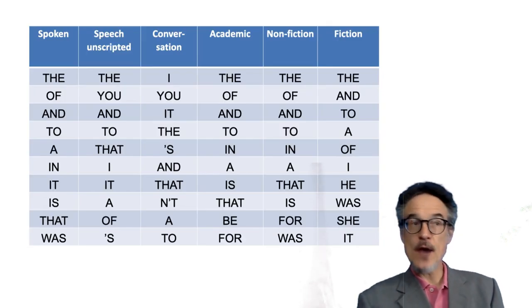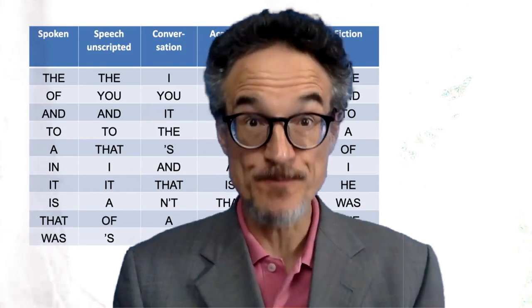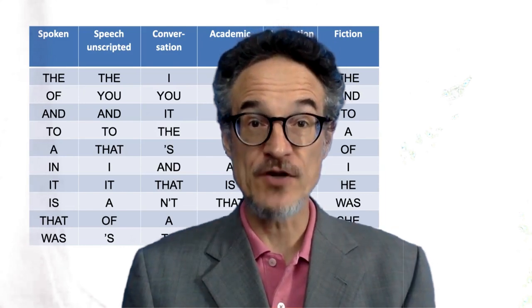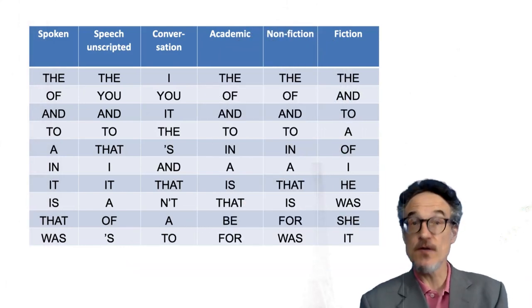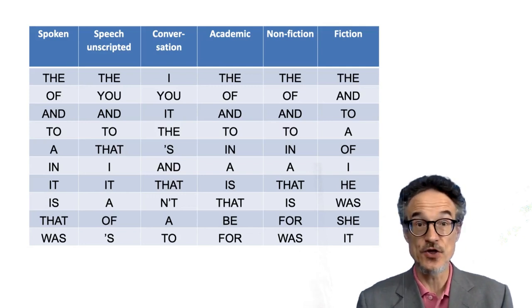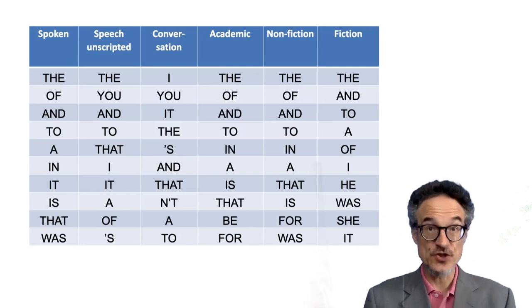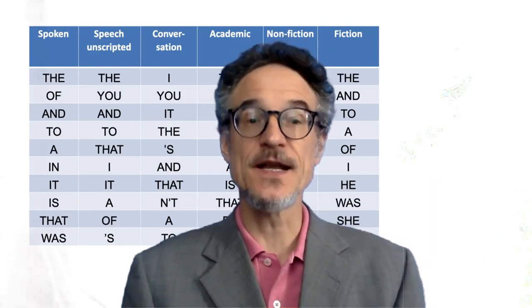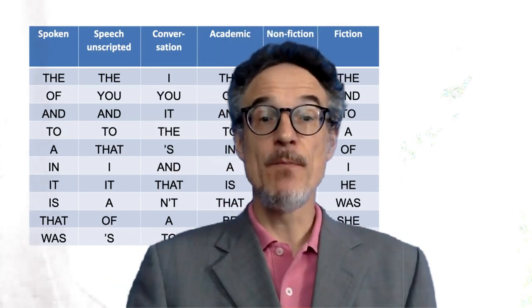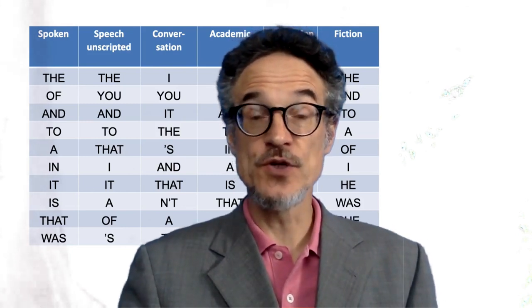So I'm now talking, this is an unscripted speech. So I'm talking mostly from memory. If I was to have a conversation I'd be using different words. If you notice conversation, I and you are very common words. In academic writing we don't use I and you at all. In fiction I is used, we also use he and she. So there are slight differences between these different kinds of situations when we're using English. But basically it's a very similar collection of words. They're all very short words.